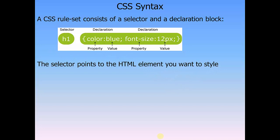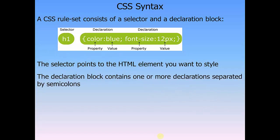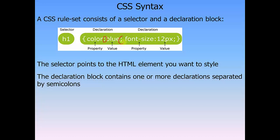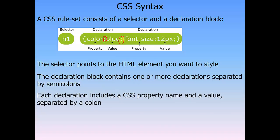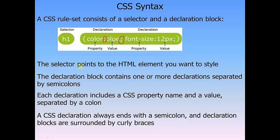The selector points to the HTML element you want to style. The declaration block contains one or more declarations separated by semicolons. A colon separates the property and the value; a semicolon separates the declarations. Each declaration includes a CSS property name and a value separated by a colon. A CSS declaration always ends with a semicolon, and declaration blocks are surrounded by curly braces.